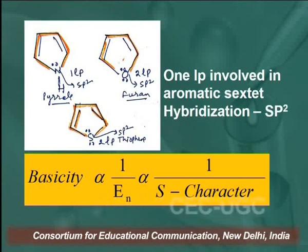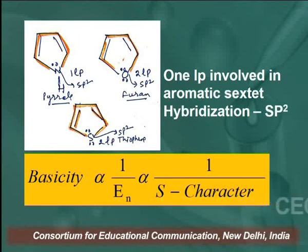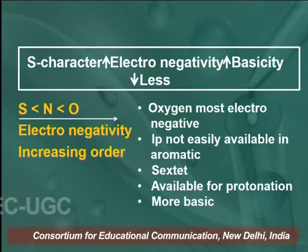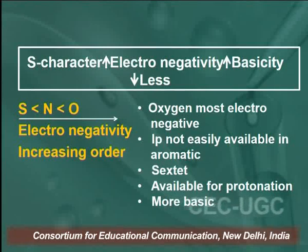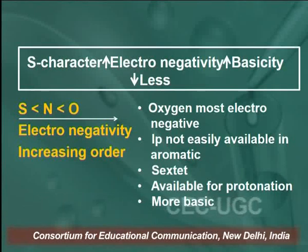If we compare the electronegativity in sp, sp2, and sp3 hybridized orbitals: in sp, the s-character is highest. If there is greater s-character, the atom will be most electronegative, because s-character and electronegativity are related to each other. So if there is greater s-character, the atom will be more electronegative, and in that case basicity will be less. This is a very important point when discussing pyrrole, furan, and thiophene.